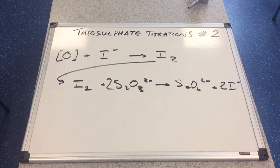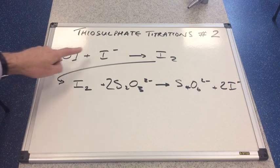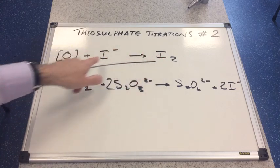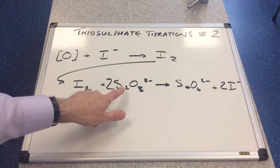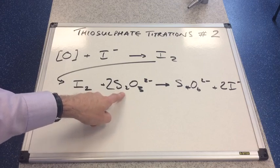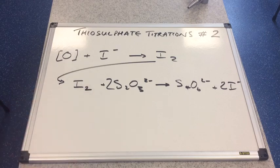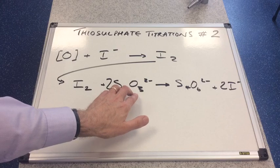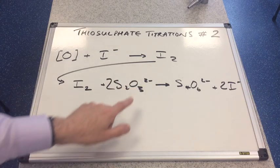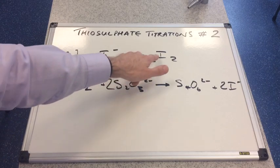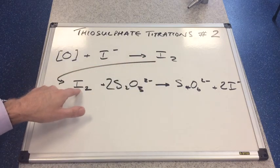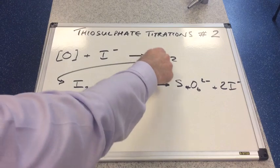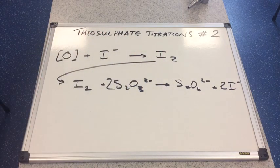In this second thiosulfate titrations video we're going to look at some more awkward questions. A quick overview of the theory: we use an oxidizing agent to oxidize iodide ions to iodine. This iodine feeds directly into the titration, and we use sodium thiosulfate solution containing the S2O3²⁻ ion of known concentration to react with the iodine. We use the titration endpoint results to work back to the original oxidizing agent.